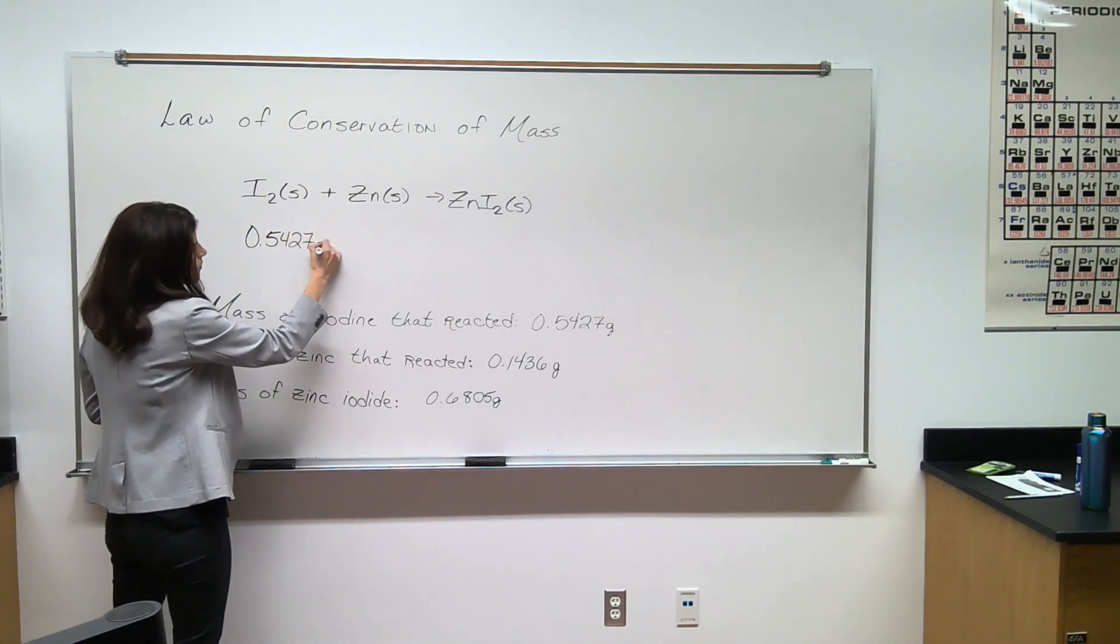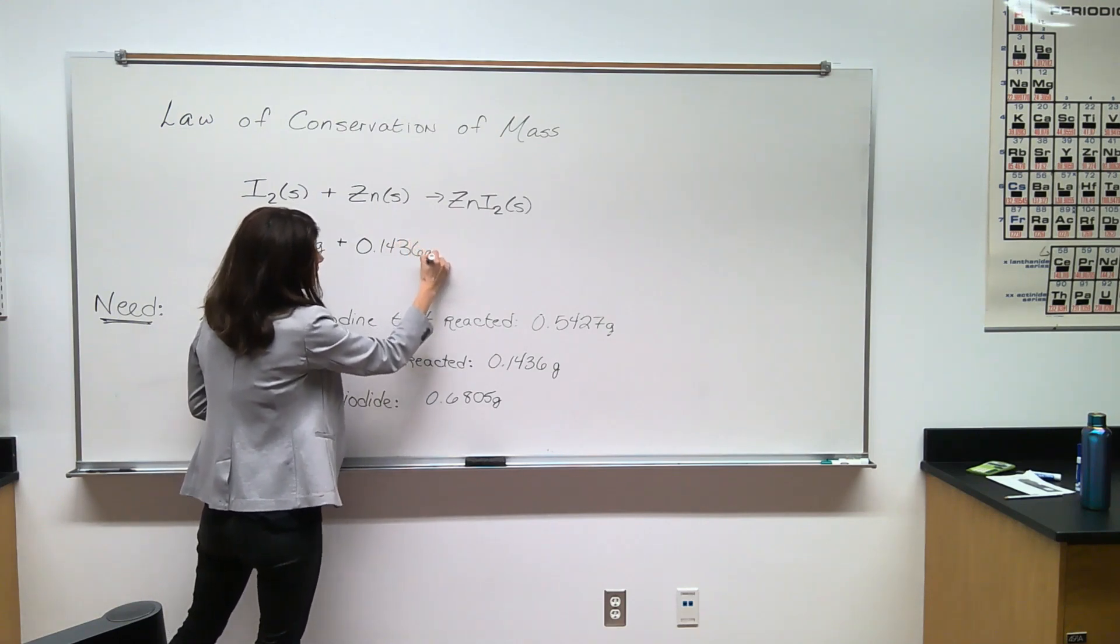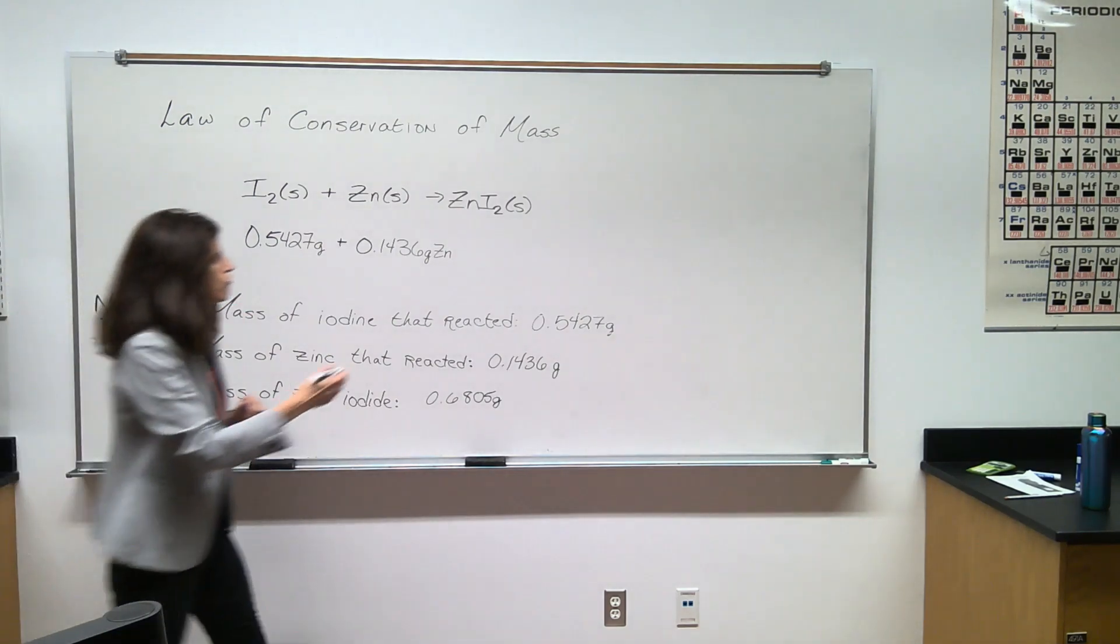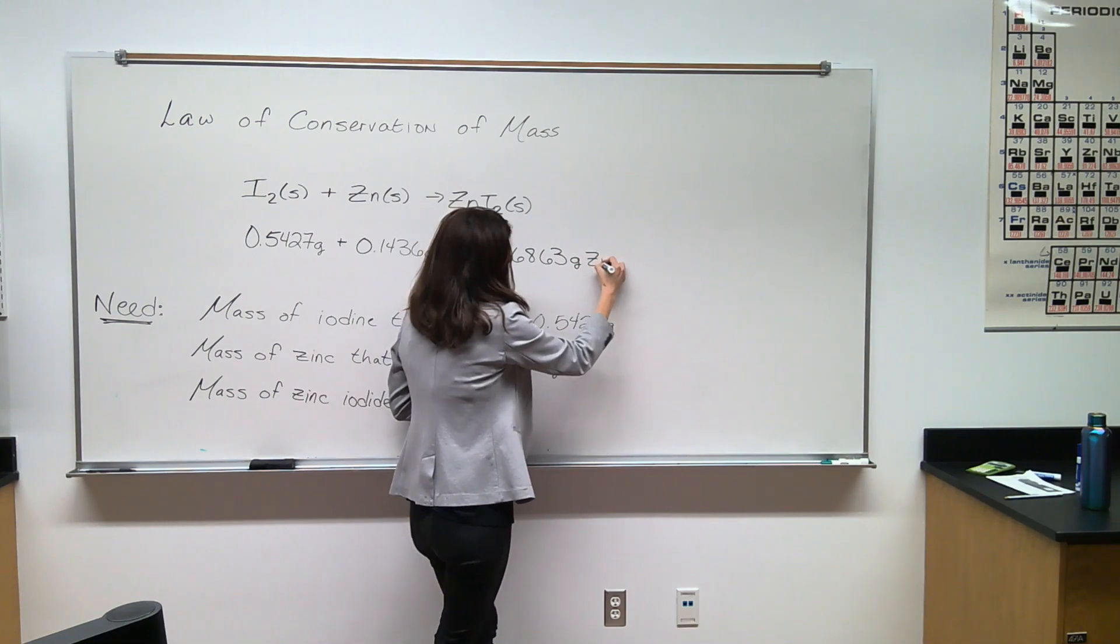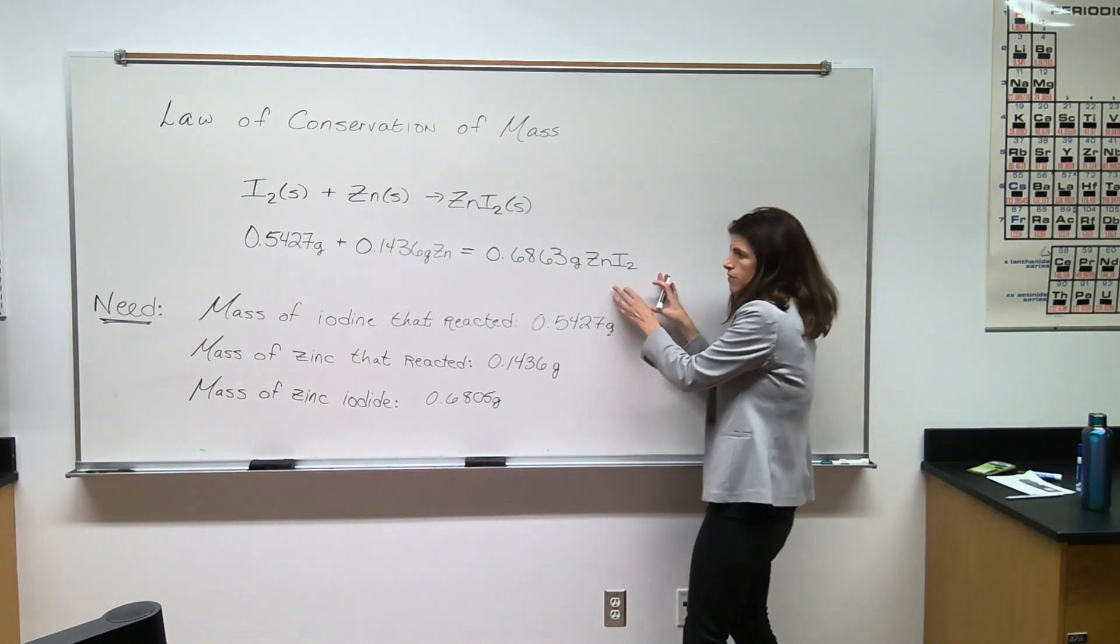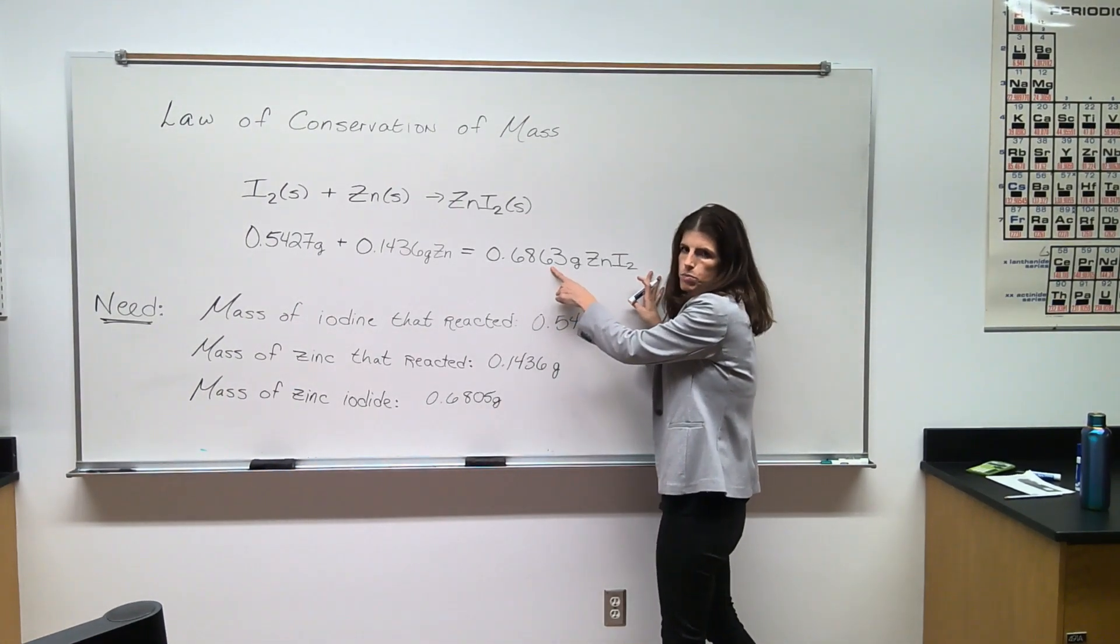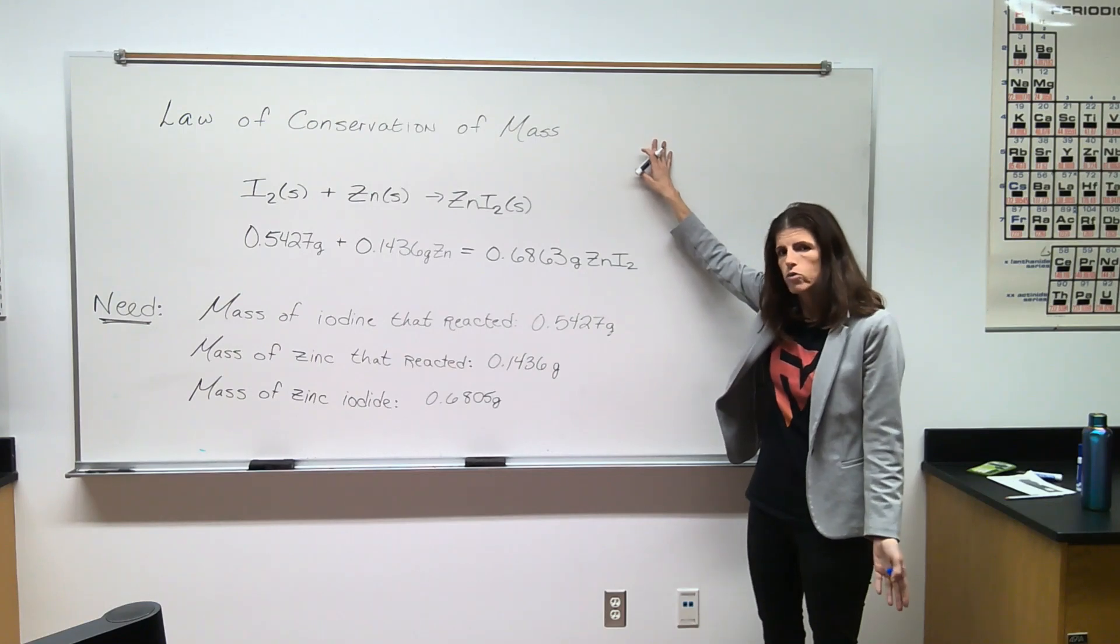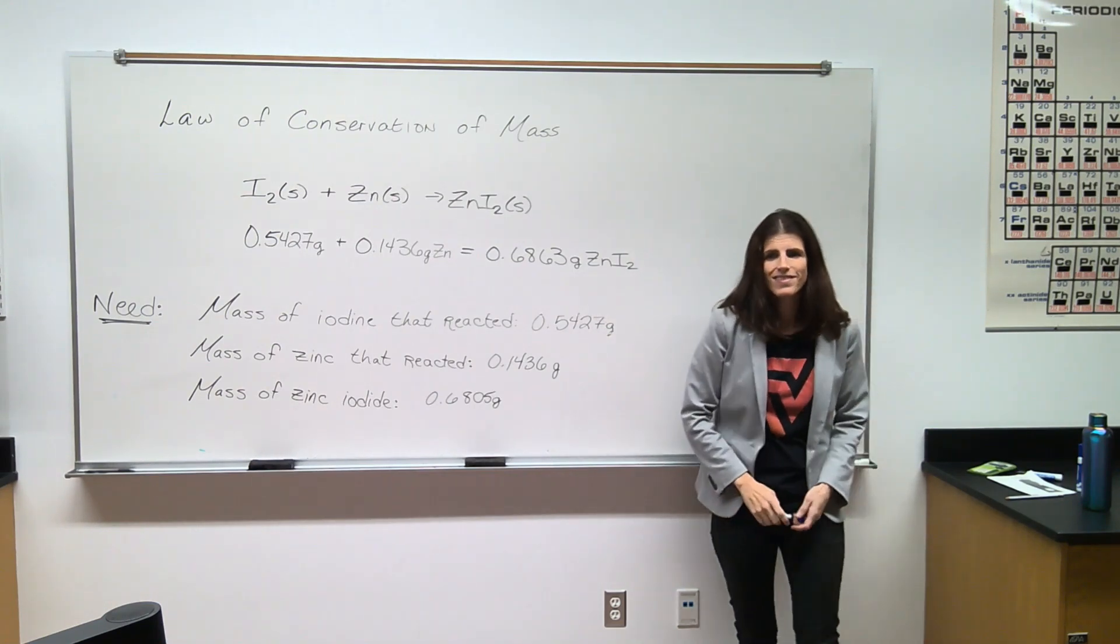So I added 0.5427 grams of iodide and we have 0.1436 grams of zinc used up throughout the experiment. If I add those two values, I get 0.6863 grams. We compare the expected value to the actual value of product that was formed. We see that they're really close - they just vary by the thousandths, which tells us two things. One, the law of conservation of mass has been followed. And two, we have minimal error in our experiment. There is a little bit, but it's nothing major.